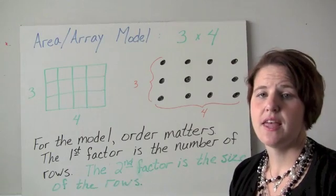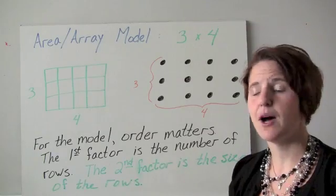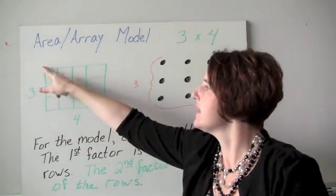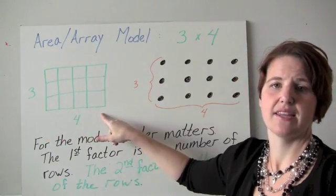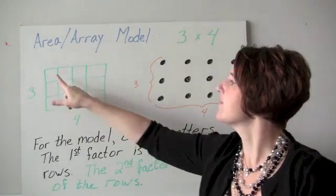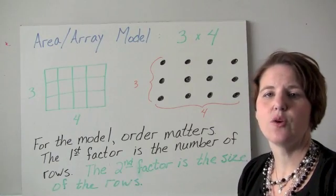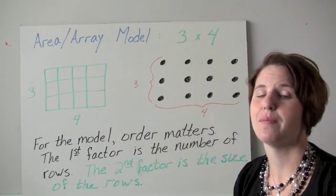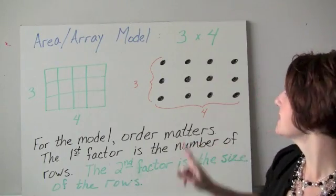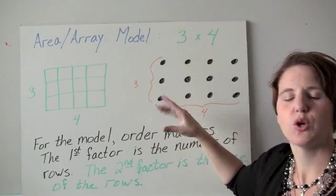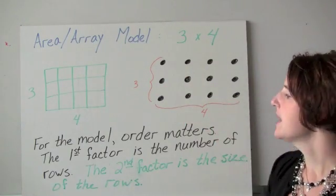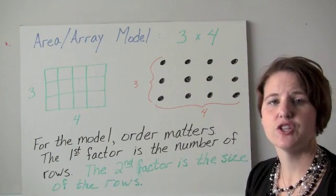Our second model for multiplication is the area or array model. The area model is a continuous or measurement model where we measure length. For three times four, we'd have a rectangle where the left side is three and the bottom side is four. Looking at how many square units we have, we get a total of twelve square units — a three by four rectangle. For an array, this is a discrete model where objects are distinct, like chairs in a classroom or books on a shelf.